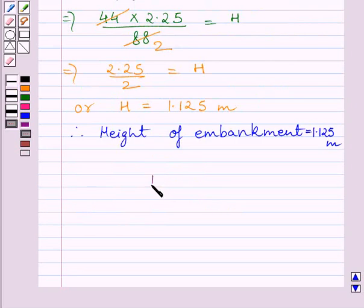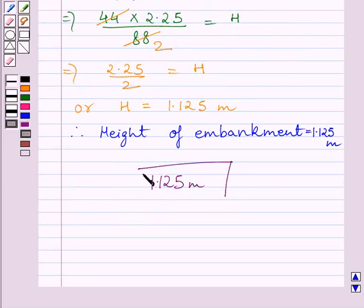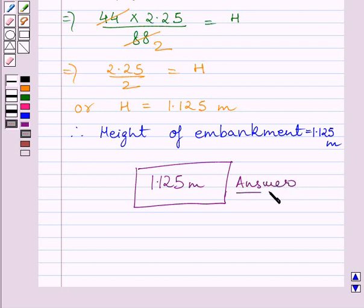The required answer is: height of embankment equals 1.125 meters. This completes the session. Hope you understood the solution. Take care and have a nice day.